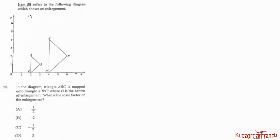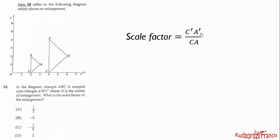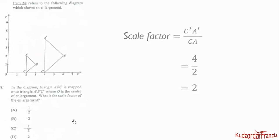Item 58 refers to the following diagram which shows an enlargement. Triangle ABC is mapped onto triangle A'B'C', where O is the center of enlargement. The scale factor is given by image length over object length for a corresponding side. Reading from the diagram, the image length is 4 units and the object length is 2 units. So the scale factor is 4 over 2, which equals 2.